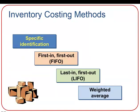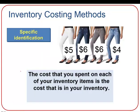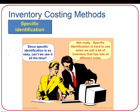Let's explore four methods for assigning value to inventory and cost of goods sold. The first is specific identification, which is the easiest to calculate but the most difficult to actually track. Specific identification values ending inventory and cost of goods sold at the exact cost spent on each individual item. However, it's hard to use when selling large volumes of inventory with lots of different costs, making it difficult to track what each item originally cost.